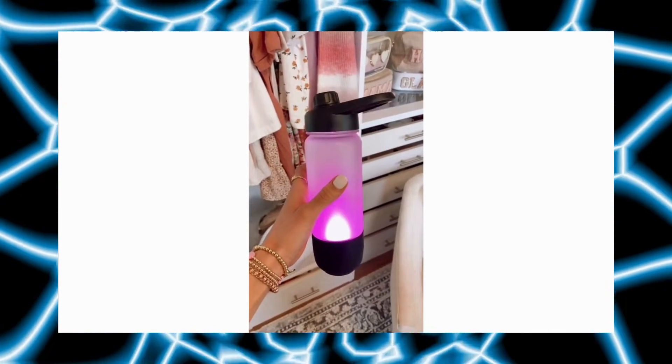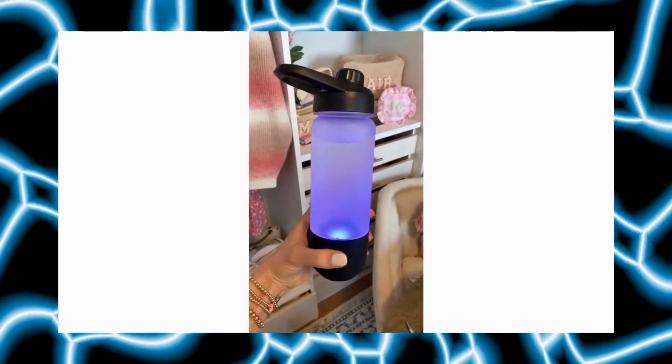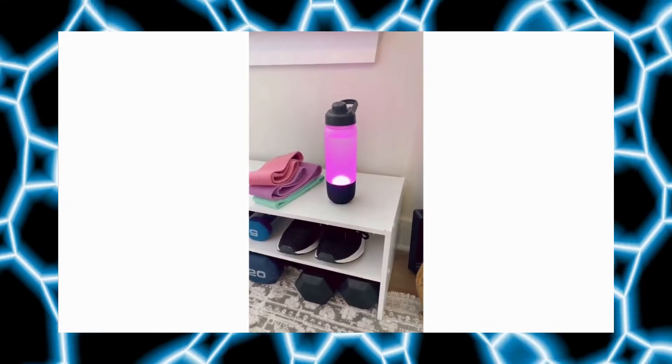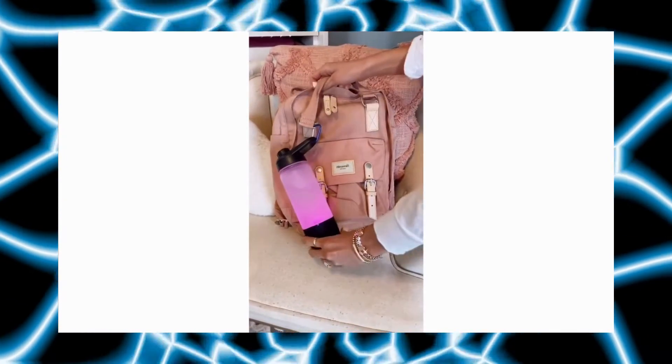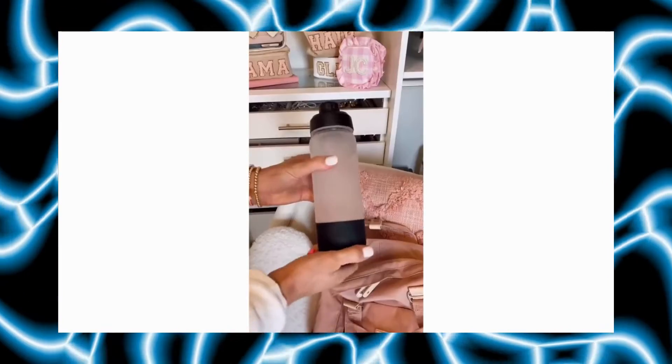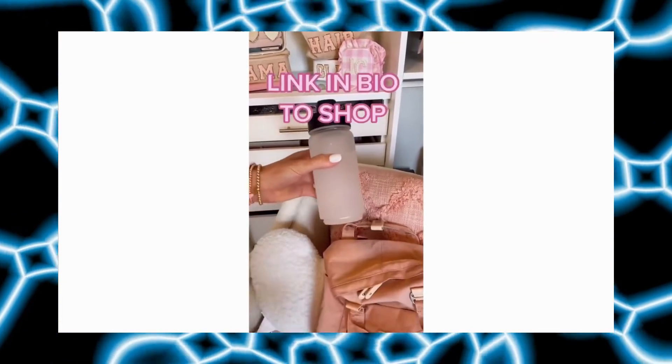This two-in-one water bottle is also a waterproof Bluetooth speaker with 360-degree sound. It's perfect for at-home workouts, outdoor activities such as hiking, and the beach. And it only took a few seconds to set up the speaker to my phone. This water bottle is also great to have at work because every hour it will light up to remind you to drink some water. This water bottle detaches for easy cleaning. Link in bio to shop this exact product.